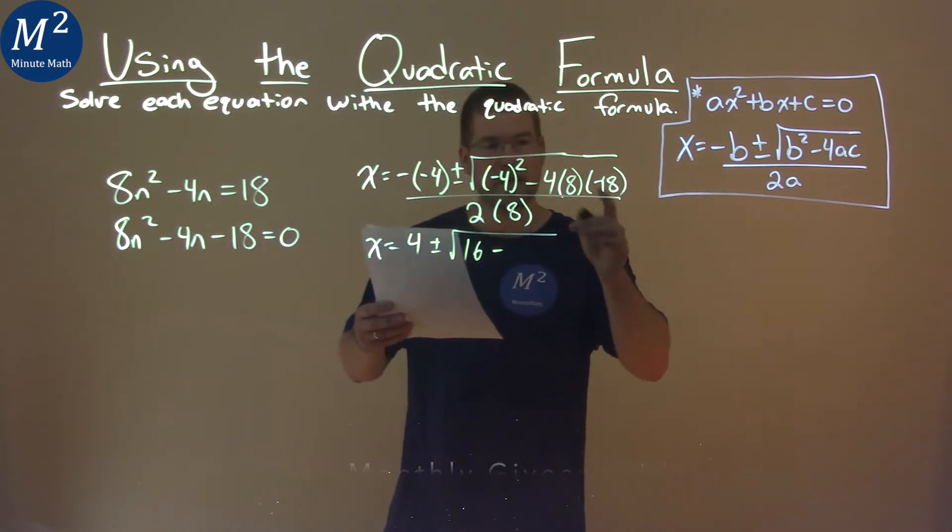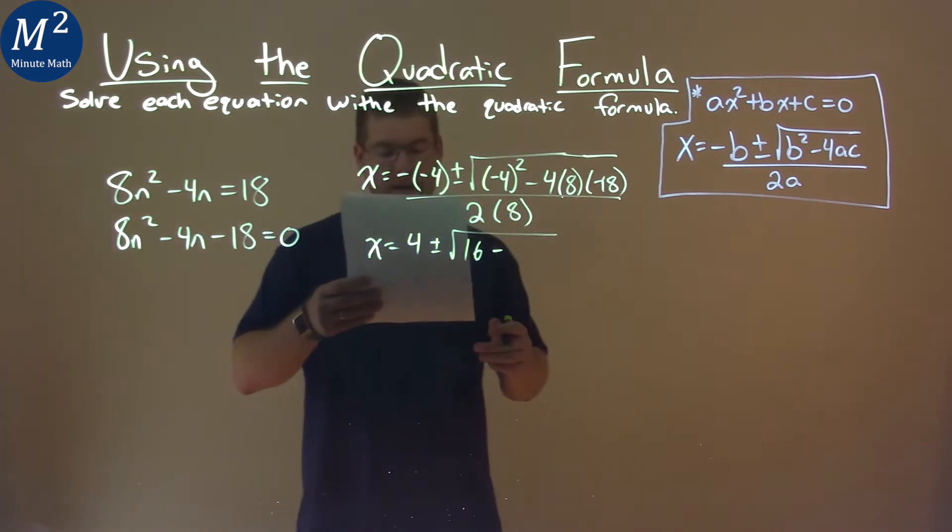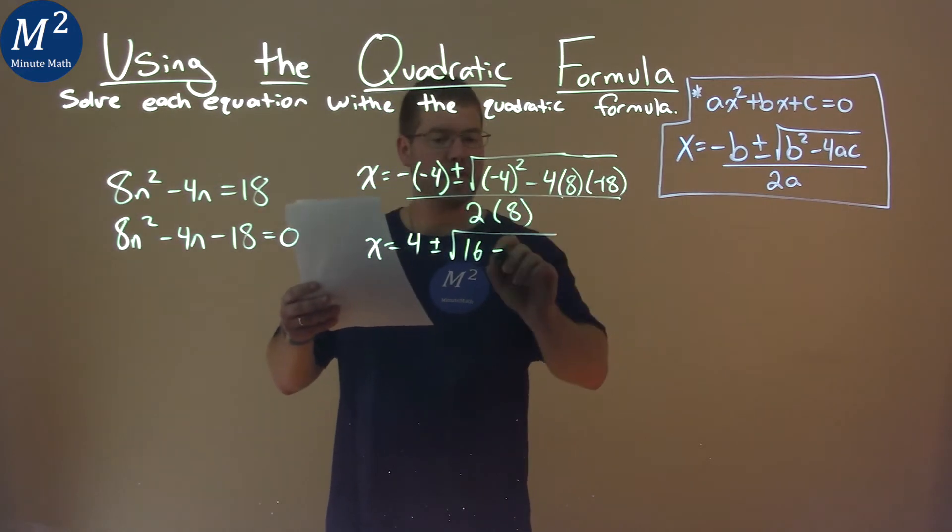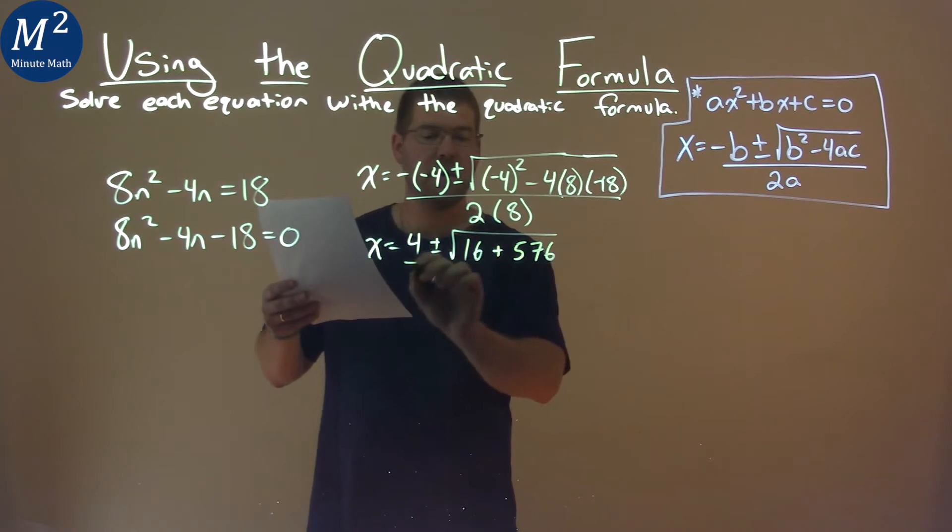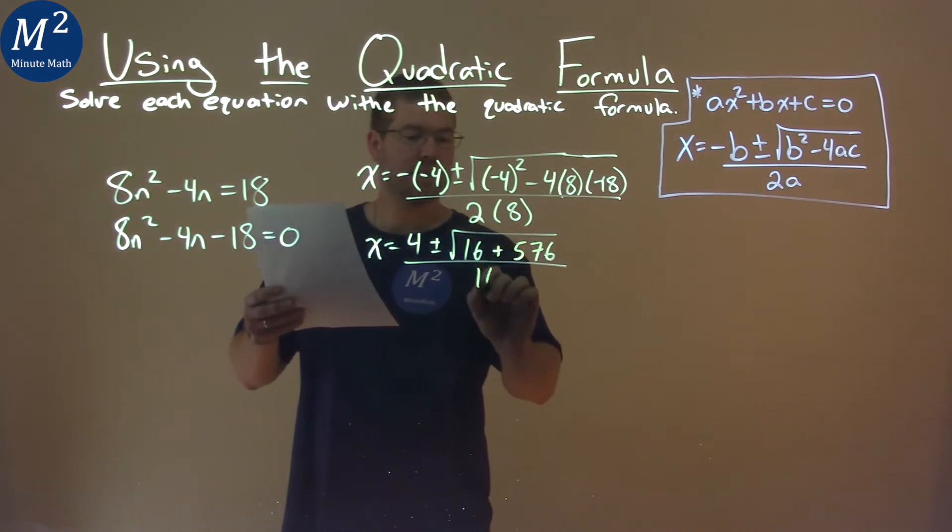And then 4 times 8 times negative 18 is a negative 576, so make it a positive 576, all over 2 times 8, which is 16.